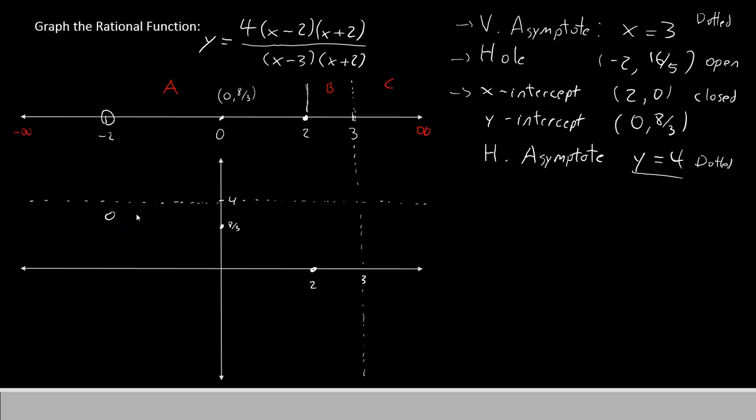To actually graph this function, let's begin by connecting all of the points that we know. Since they're all within region A, they'll all be directly connected. We have sort of a curve here. Now toward the left, you're going to keep going left, but you cannot cross that dotted line. We're just going to run very close to it, but we won't cross it. It'll run off to infinity at around y equals 4.